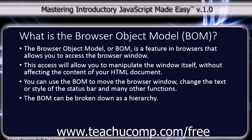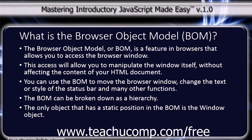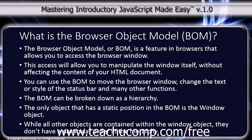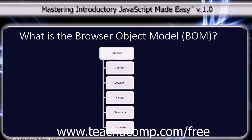The BOM can be broken down as a hierarchy. The only object that has a static position in the BOM is the Window Object. While all the other objects are contained within the Window Object, they don't have a particular order in the hierarchy. A simple visual reference would be the Window, Screen, Location, History, Navigator, and Document, all contained within the Window Object, but in no particular order.